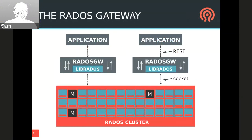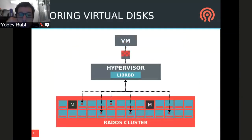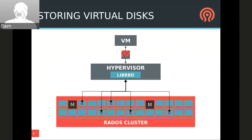RadosGW itself doesn't store anything, but it uses librados to handle the storage and replication. Similarly, RBD provides a block interface backed by a RADOS cluster. The hypervisor uses libRBD to translate block reads and writes into librados operations on objects in the RADOS cluster. Each RBD image ends up chunked or striped across four-megabyte objects strewn across the RADOS cluster according to the RADOS placement policies.